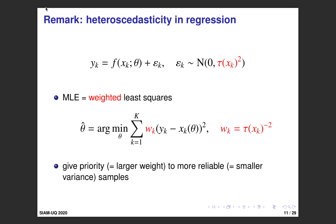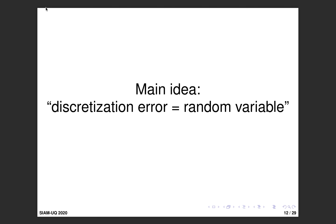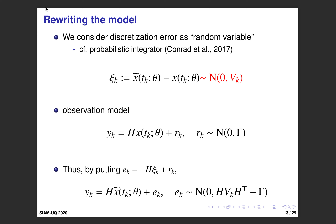We use this idea to estimate differential equation models. We consider discretization error as a random variable, motivated by a recent trend in probabilistic numerics — for example, the paper by Conrad et al. on probabilistic integration of ODE. We model the discretization error xi_k as a Gaussian random variable with covariance v_k.